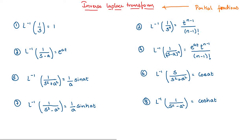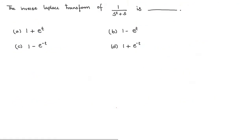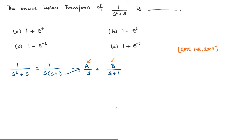Let us solve a few questions to understand this concept. To solve this question, first we need to find the partial fraction of this equation by writing 1/(s²+s) as 1/(s·(s+1)). To find the partial fraction, we write it as A/s plus B/(s+1). Sending the denominator to the right-hand side, we get 1 = A·(s+1) + B·s.